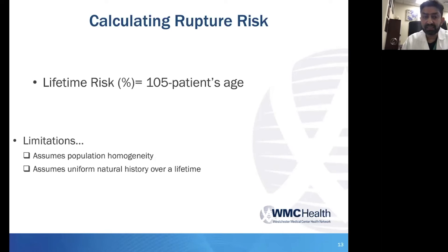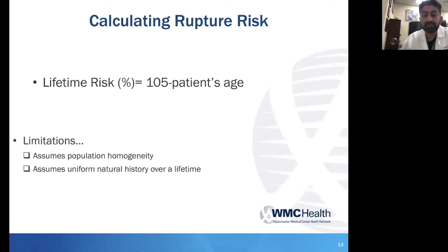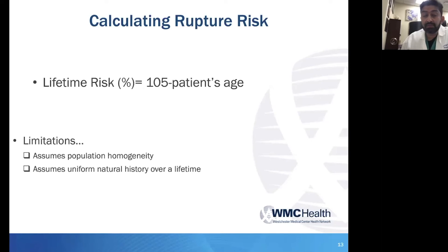This simplified formula, though effective, does have limitations. It assumes population homogeneity, and we know there are many differences in overall populations country by country and region by region. It also assumes uniform natural history — that if you haven't had a rupture in the last five years, your risk for the next five years is the same. Most clinicians who have followed patients for decades recognize there's probably a reduction in annual risk the longer someone has had an AVM without rupture, though that reduction isn't well-classified. So this formula likely overestimates rupture risk on the whole.